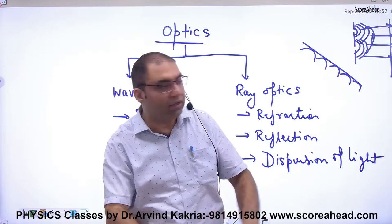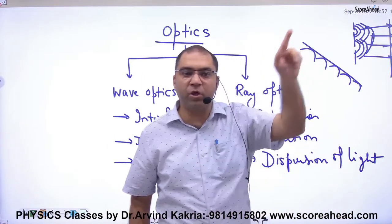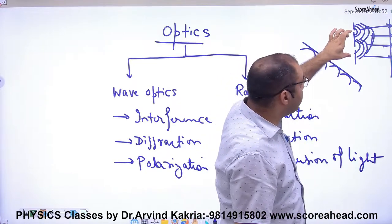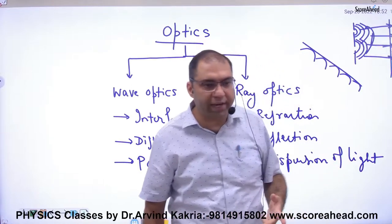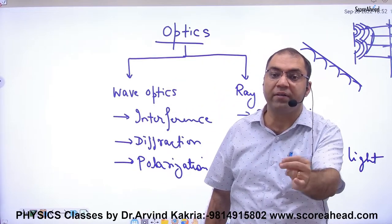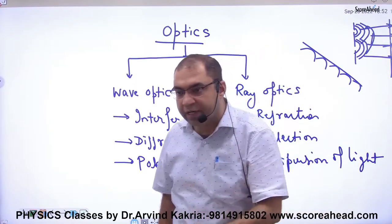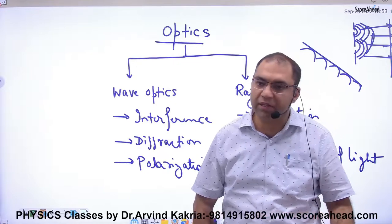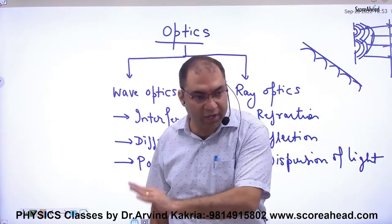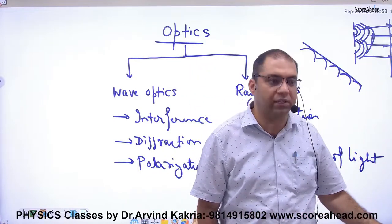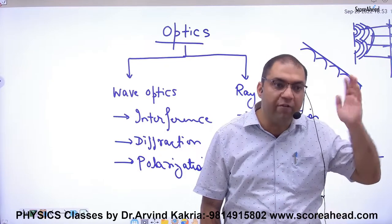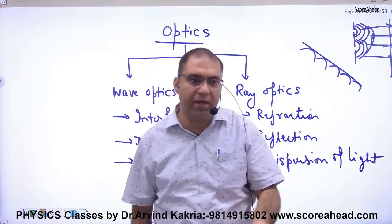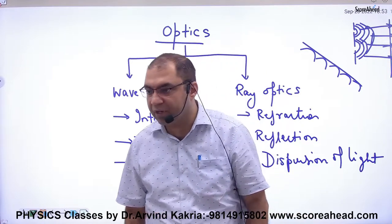Young also showed that given the setup — the distance between the slits, the distance to the screen, and the wavelength of light — you could predict whether a given point would be bright or dark. This meant people had to accept that light has a wave nature. It was the first powerful experiment proving light is a wave, following the superposition principle, just as sound waves and string waves do. Light was shown to be of transverse wave nature.